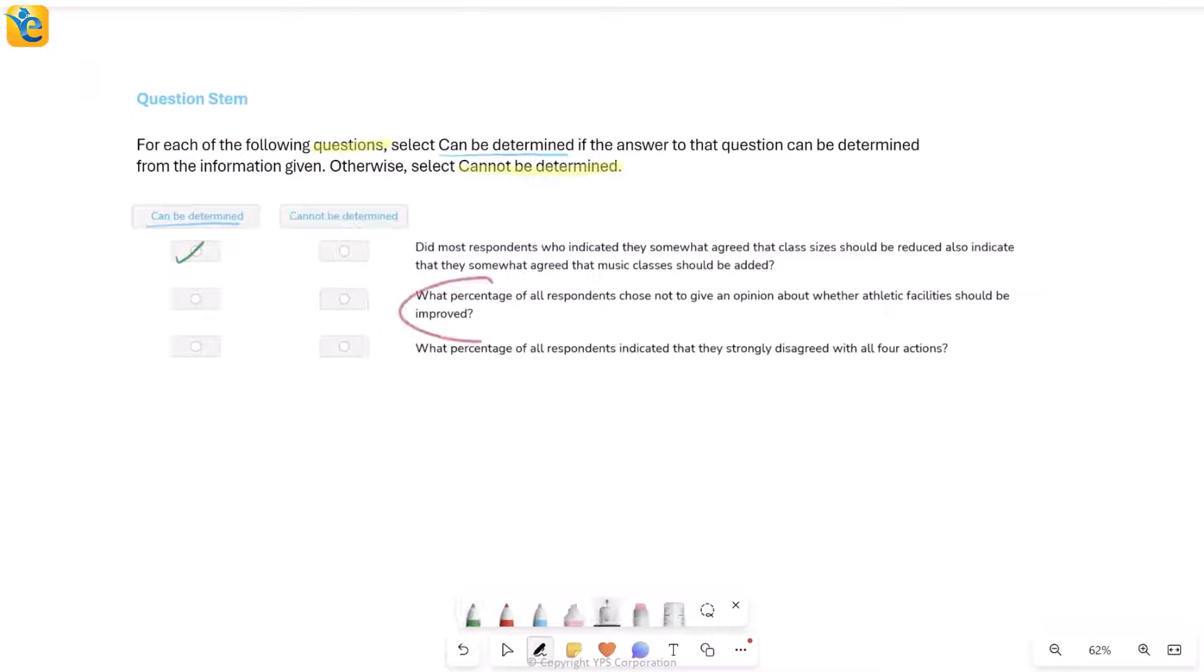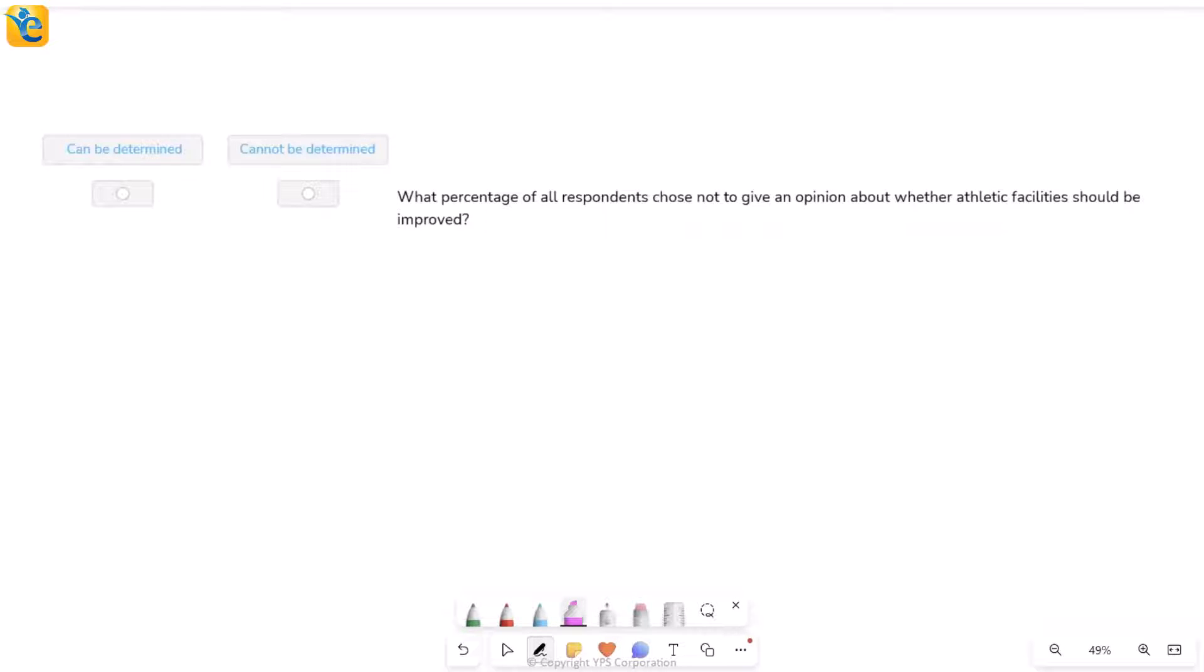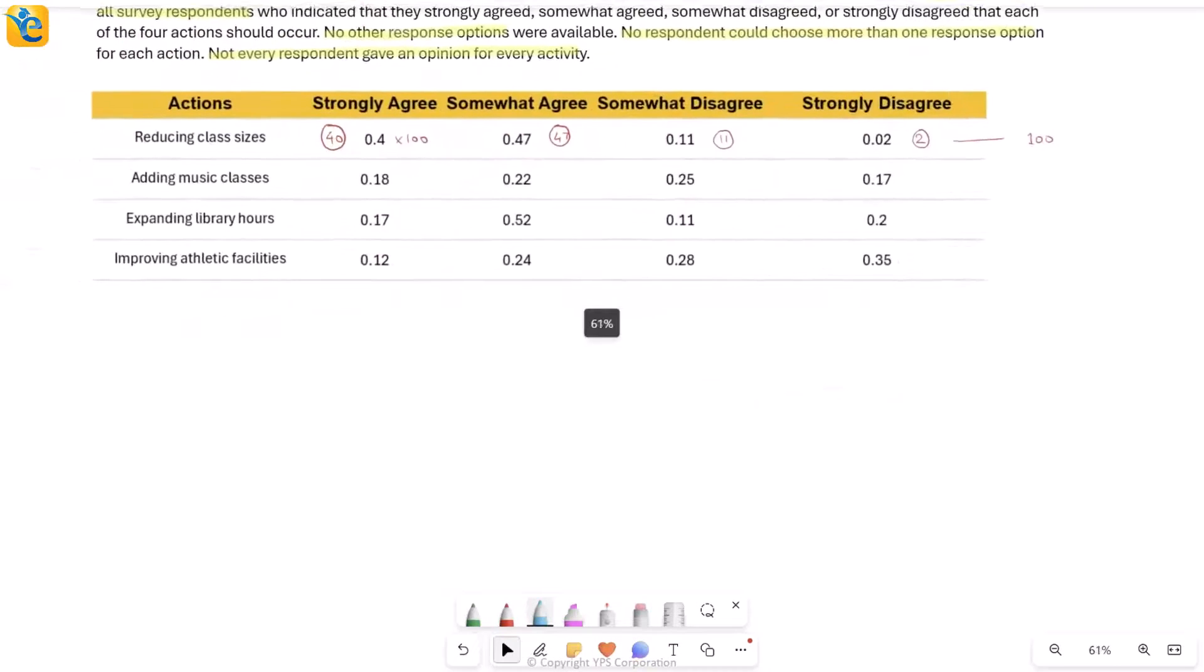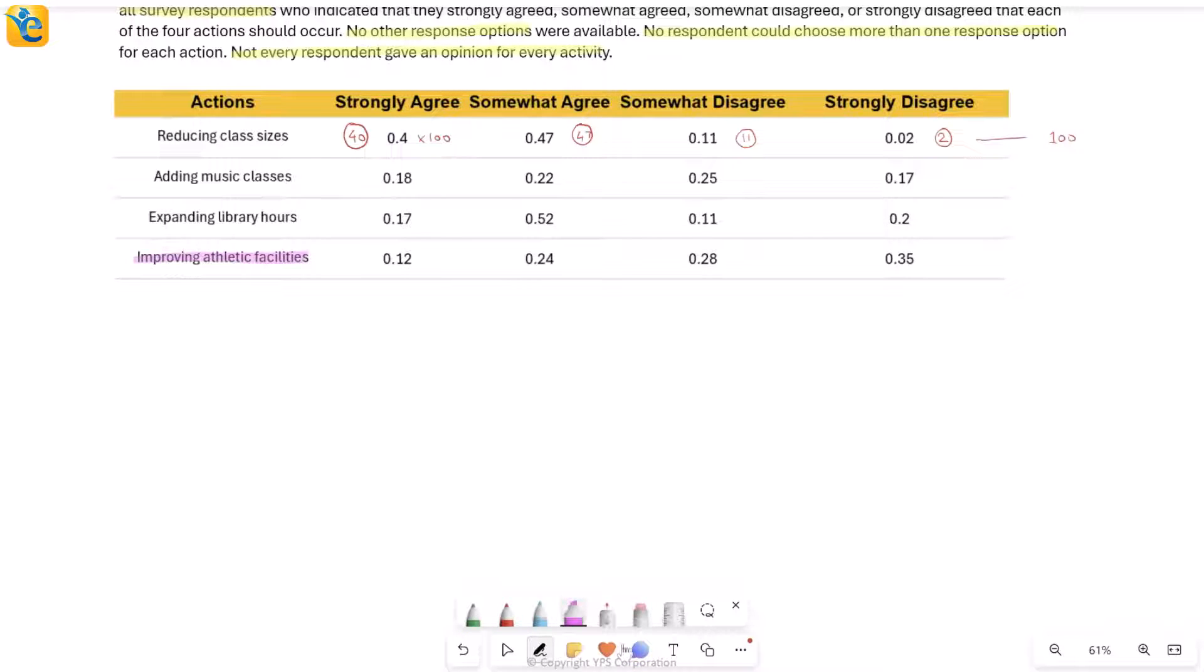We will now look at the rest of the questions. The second one says: what percentage of all respondents, so all 100 respondents, what percent chose not to give an opinion about something specific, athletic facilities? I'm talking about this last activity only and I want to know what percentage did not express an opinion. All those who did express an opinion are here. So if I add all of these numbers, I will get the percentage who did express an opinion. It is going to be less than or equal to 1 for sure.